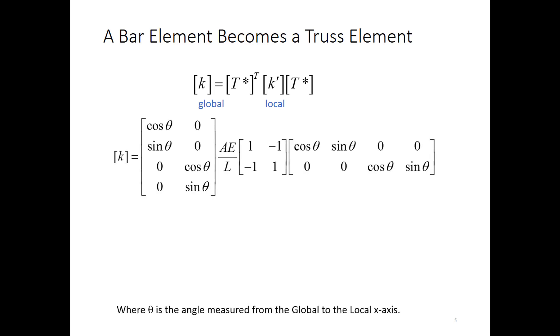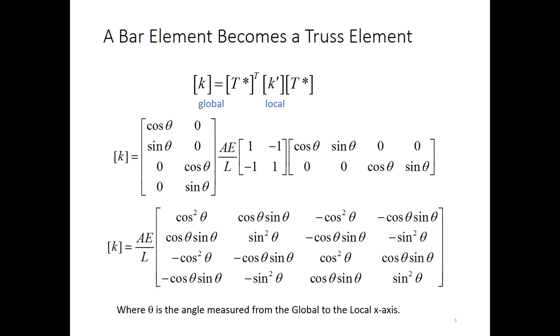If I plug in those values here using the simple k prime that we developed for the bar element, and then the T star that I previously developed, where theta here represents the angle measured from the global to the local x-axis, I can multiply these out, and I get now a standard expression for a 2D truss element, where theta represents the angle between the global x-coordinate and the axis of the truss member. So you could go straight to this, but I think it's also important to see where it came from because of this transformation matrix multiplication.